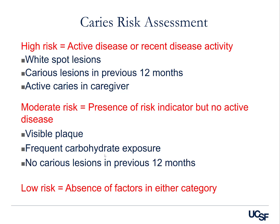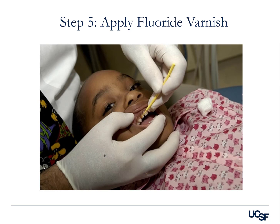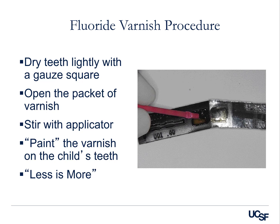Step five is to apply fluoride varnish — dry the teeth, apply it, and when it contacts saliva it sets and sustains release over time. Here is how you do the fluoride varnish procedure: dry the teeth with 2x2 gauze, open the package of varnish, use the tip of the brush to stir it up with the applicator, and then paint the varnish on the child's teeth. Use the term 'I'm going to put a vitamin on your teeth, and the vitamin makes your teeth stronger.' You don't have to put a lot — as long as it contacts the teeth, that's all you need. Have the child spit into a cup. If using suction, be aware that the resin may clog up the suction tube, so you may have to replace the filter by the end of the day.